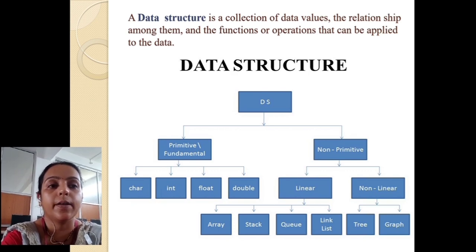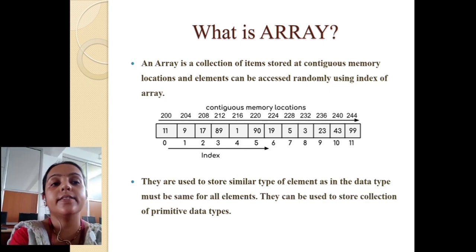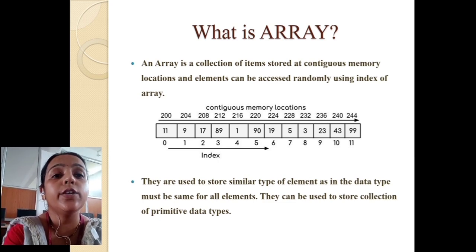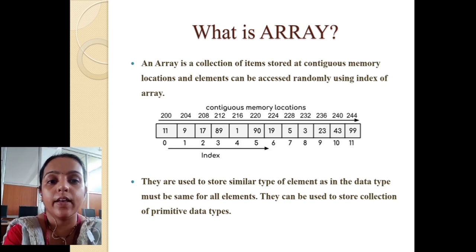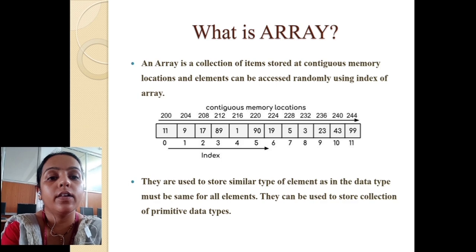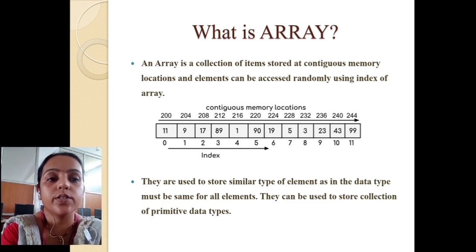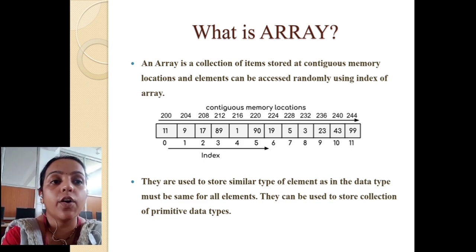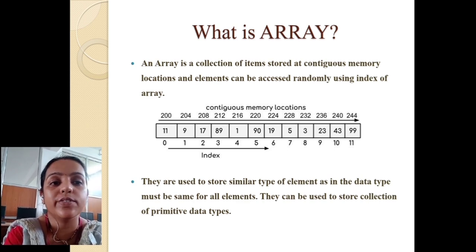What is an array? An array is a collection of items stored at continuous memory locations, and elements can be accessed randomly using their index. In first year you may have learned arrays in advanced C programming. Similarly, arrays are used in C++ programming as well. It is a collection of items stored at continuous memory locations.